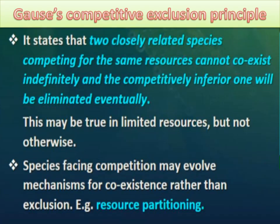The next evidence is Gause's competitive exclusion principle, given by Gause. It states that two closely related species competing for the same resources cannot coexist indefinitely, and the competitively inferior one will be eliminated eventually. So if there is competition among two closely related species, the inferior one will be eliminated and the superior one will survive.